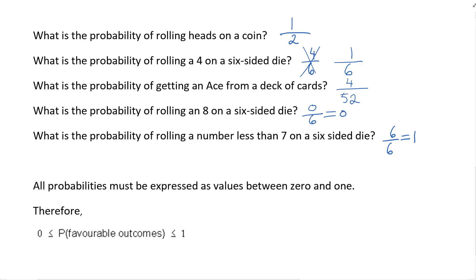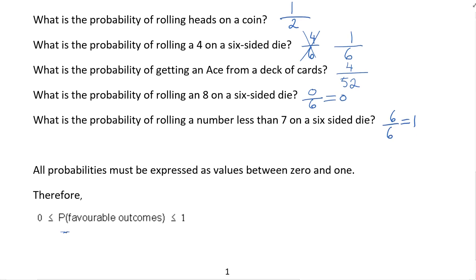All probabilities, if you look at the probabilities that we just figured out, they must be expressed as values between zero and one. You will never have a negative probability. So 0 ≤ P(favorable outcomes) ≤ 1 just means all of our probabilities will be between zero and one always, never negative, never greater than one.